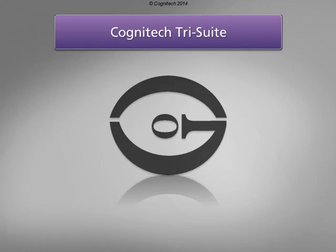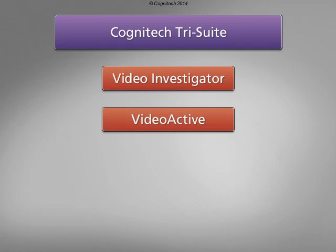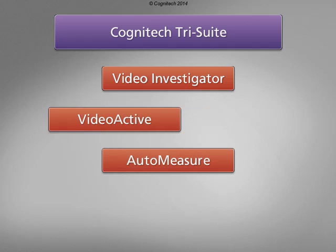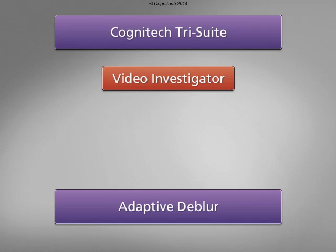The Cognitec TriSuite software package includes Cognitec Video Investigator, Cognitec VideoActive, and Cognitec AutoMeasure. Video Investigator is Cognitec's comprehensive video processing platform for extracting the utmost available clarity from image or video sources. One of Video Investigator's primary functions, Adaptive Dblur, will be covered in this interactive tutorial.